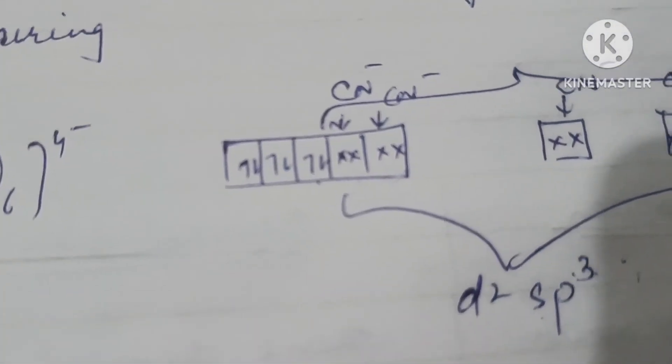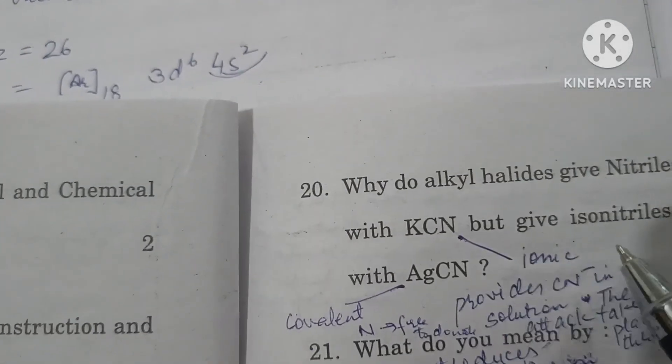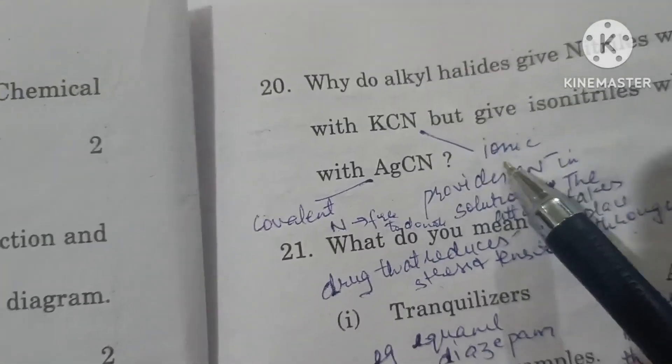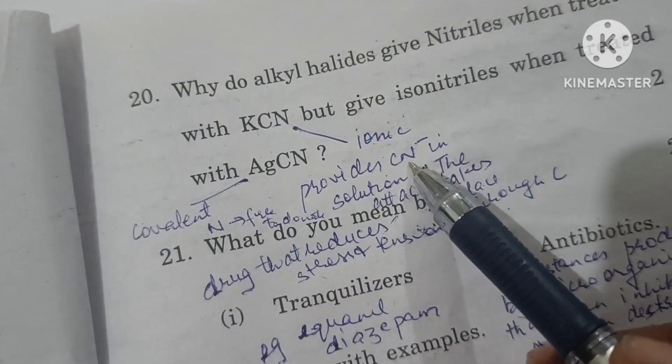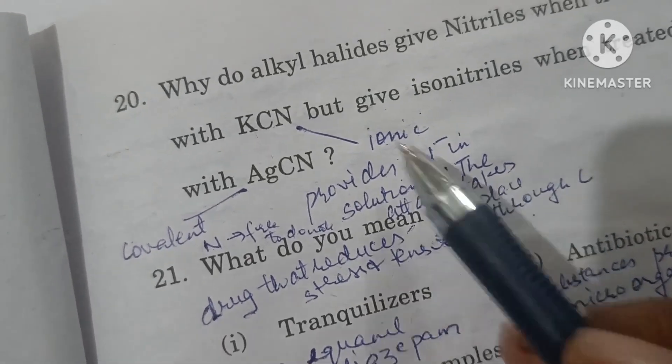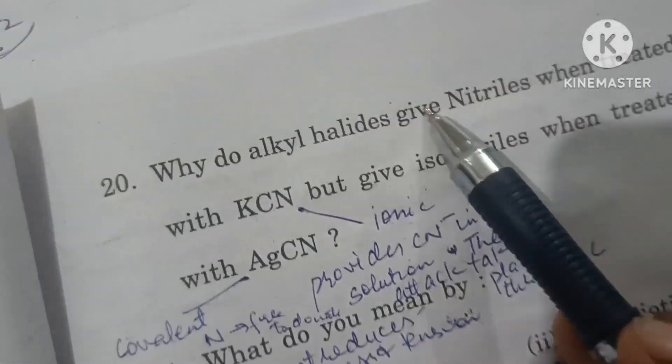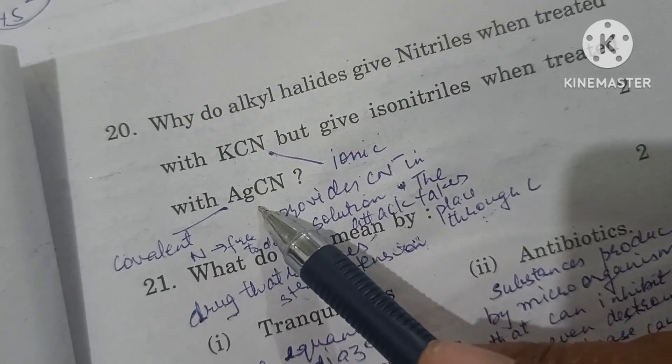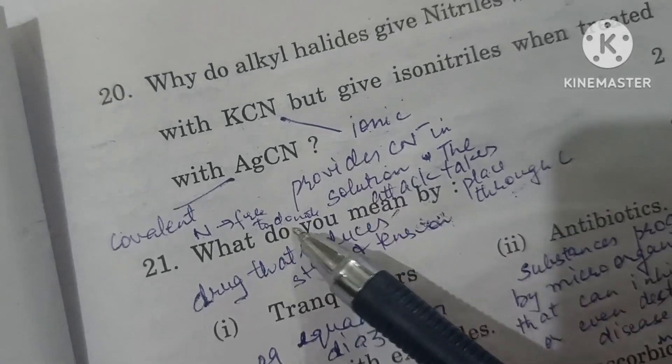Why do alkyl halides give nitriles when treated with KCN but give isonitriles when treated with AgCN? Because KCN is basically ionic in nature. When it breaks, cyanide ion provides the solution and attacks through carbon, forming alkyl nitriles. In silver cyanide, it's a covalent compound. The bond breaks from here, nitrogen electrons are available for bond formation, so it bonds through nitrogen forming isocyanide.